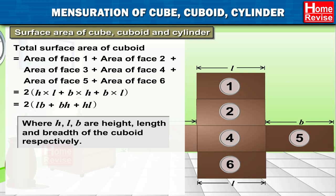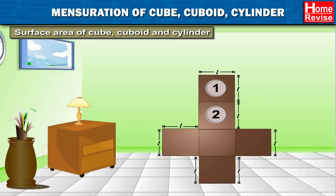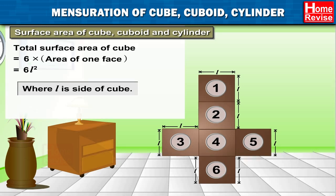This simplifies to 2(LB + BH + HL), where H, L, and B are the height, length, and breadth of the cuboid respectively. Similarly, if we open a cube, we get six identical faces. Therefore, total surface area of a cube is equal to 6 times the area of one face, which equals 6L², where L is the side of the cube.